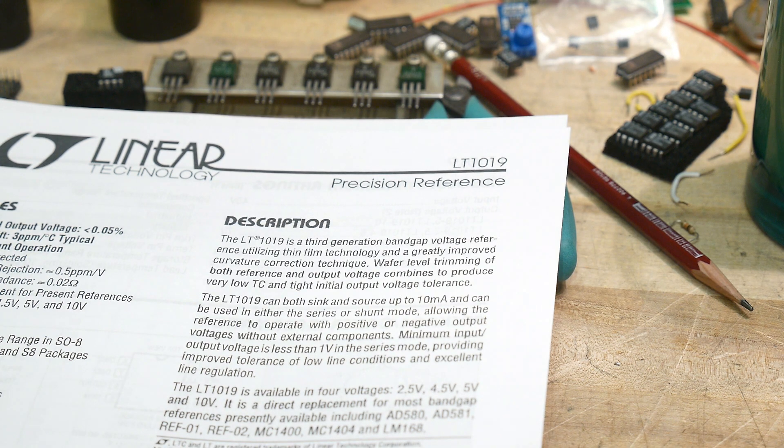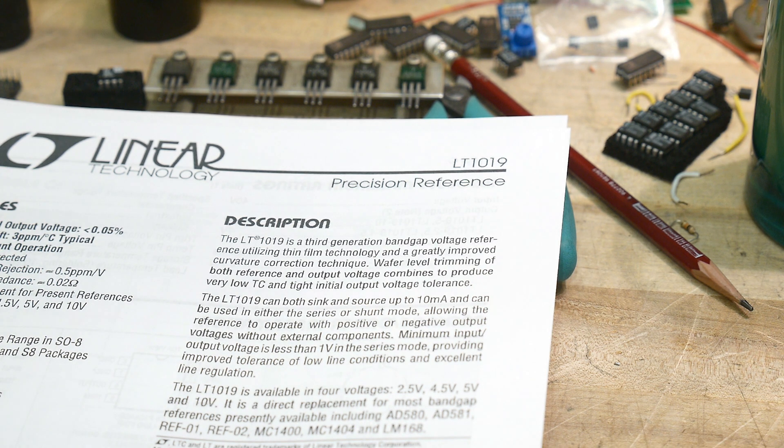And this one has a pretty good spec on it. It has less than 0.05% ultra low drift, 3 ppm per C. And it's available in different voltages. You can get it for two and a half, four and a half, five, and 10 volts output.